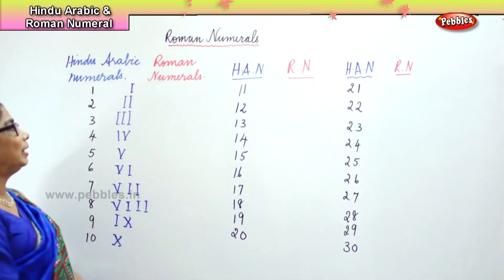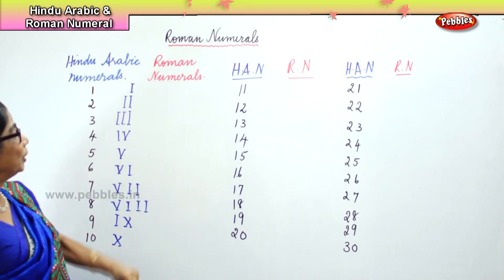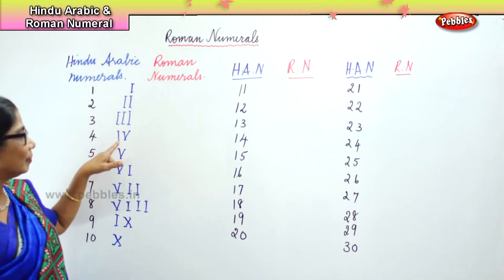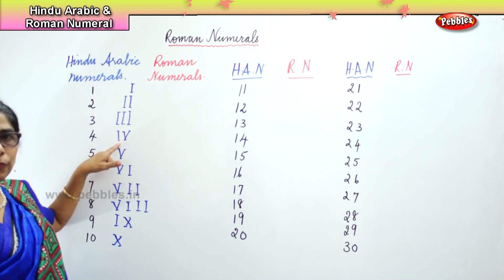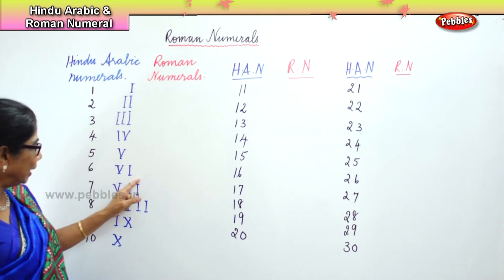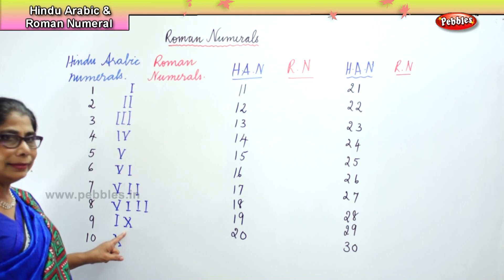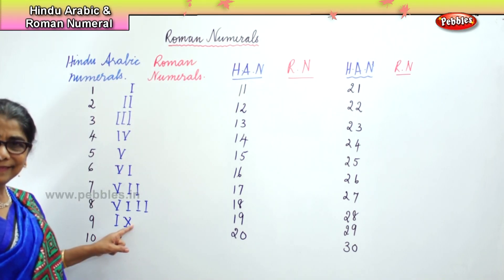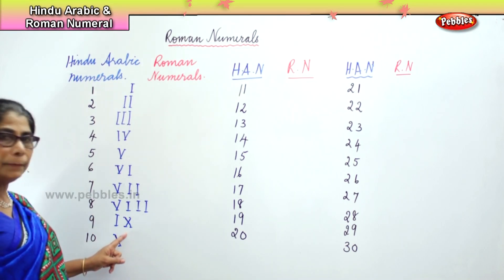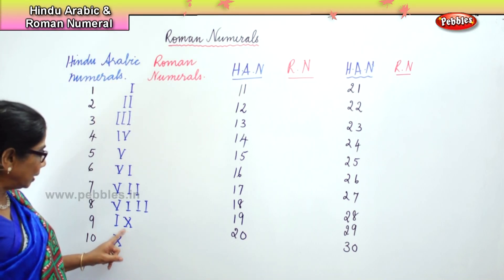Now let's look very carefully. One, two — this is Hindu-Arabic, this is the Roman numeral. One, two, three, four — there is a change: five take away one is four, so one and five makes four. Five, six, seven, eight, nine — there is a change: you put the ten, and to the left of it is a smaller number, you minus from the greater number. Ten take away one is nine. So this is nine and ten.